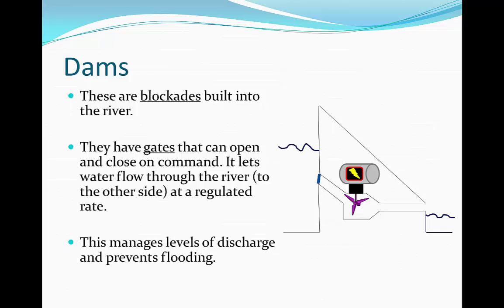This manages levels of discharge, because if we close the gates, there's not going to be much discharge in the part of the river flowing onwards. If there is too much rain and discharge increases on the downstream end where we don't want much water, without the dam that area would flood. However, by stopping the flow of water from one end of the river to the other, we decrease the amount of discharge in the river, hence managing the effect of the flood.